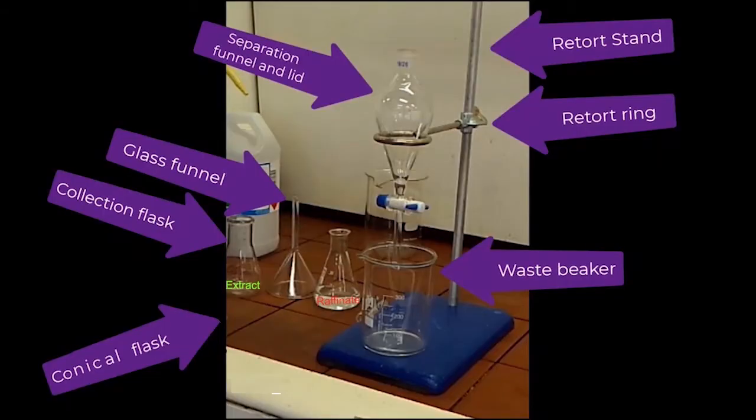Using a separation funnel is a good way to extract and wash organic products. To set up, you will need the following: a retort stand with a retort ring, a separation funnel of appropriate size with a lid that fits tightly, a waste beaker, a collection flask, and a conical flask.